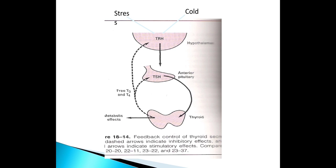It is a feedback regulation. Increased levels of thyroid hormone in the body decrease the secretion of TSH from the anterior pituitary. It also has an effect on the hypothalamus to decrease the secretion of TRH. This is an example of a clear-cut negative feedback mechanism.